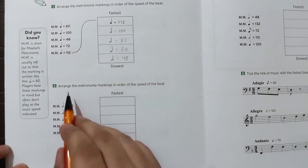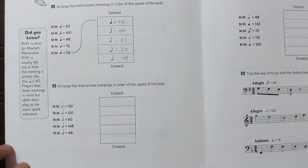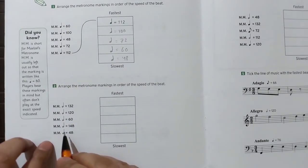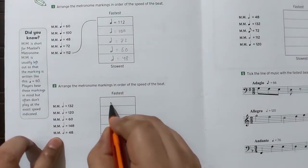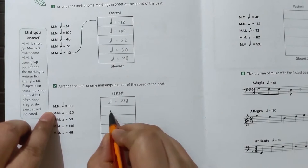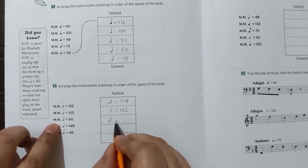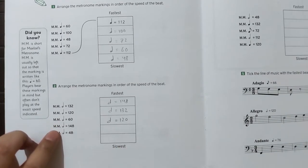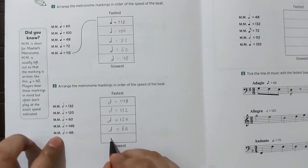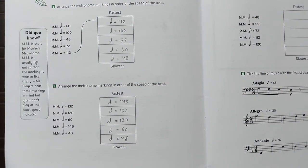In the next one, they have said to arrange the metronome markings in order of speed of the beat, and now they have given minim beats. So from fastest to slowest: minim = 148, then minim = 132, then minim = 120, then minim = 60, and then minim = 48.